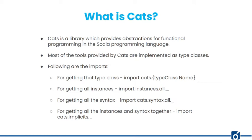Most of the tools provided by Cats are implemented as type classes. When you create a type class in Scala, you have to create instances and syntax for it — it is a whole process. But with Cats, it has implemented its tools using type classes for all the basic types. Most of the time when you use something in Cats, you just need to import it, and you don't actually need to create a type class for it.